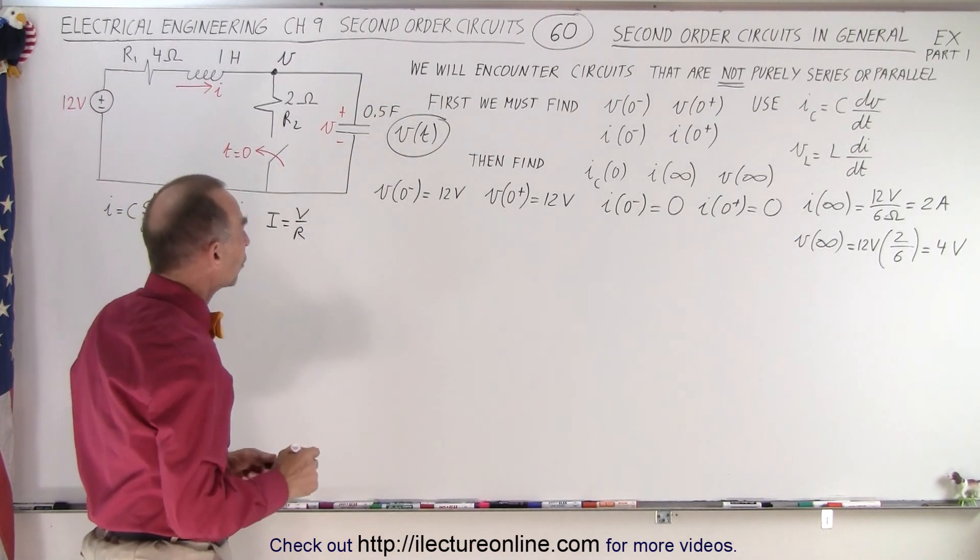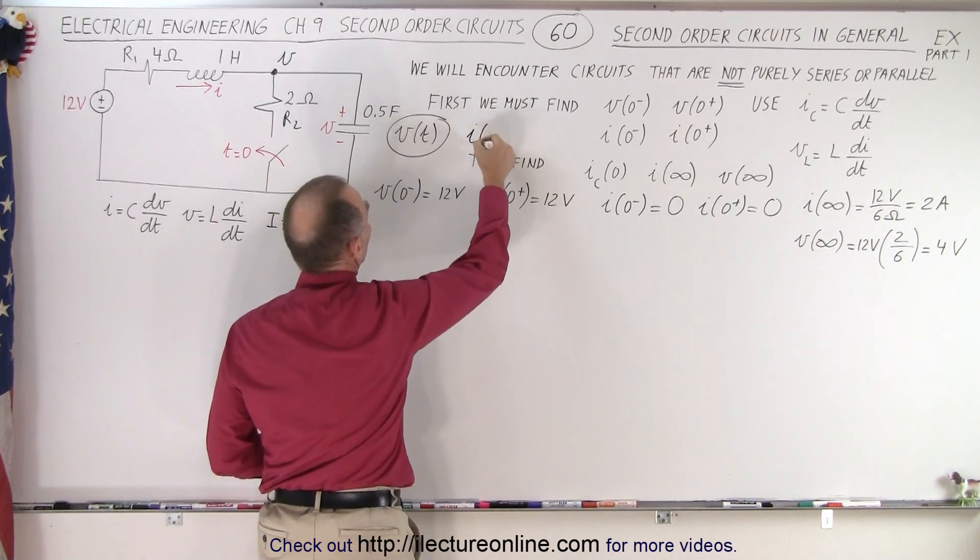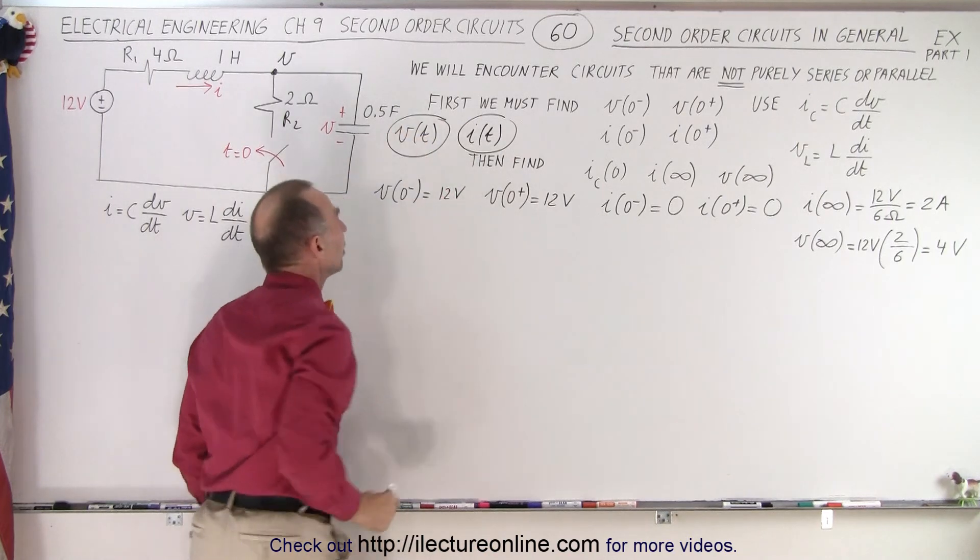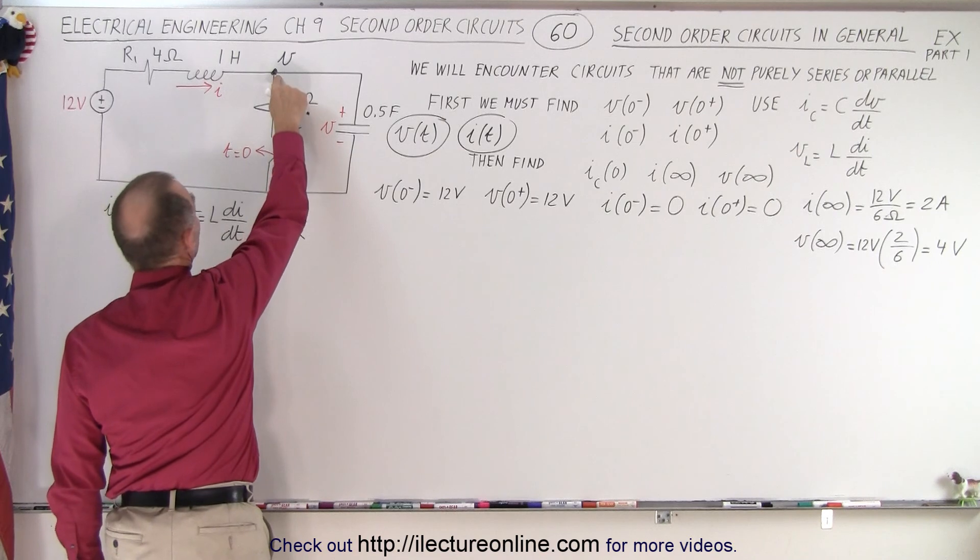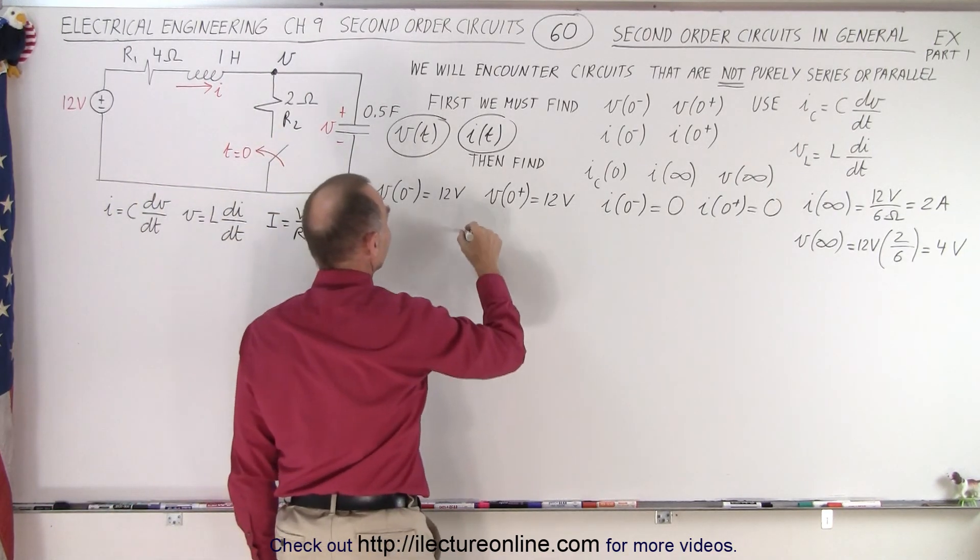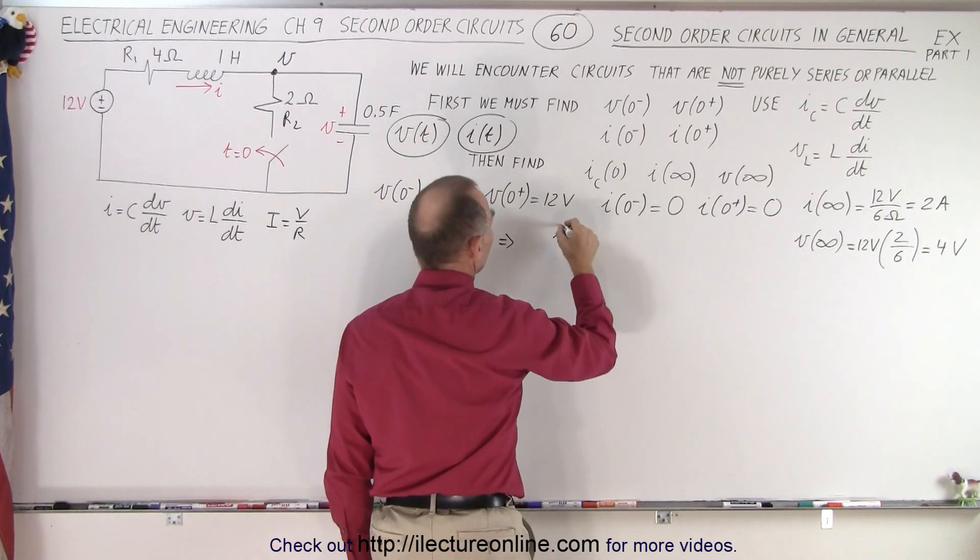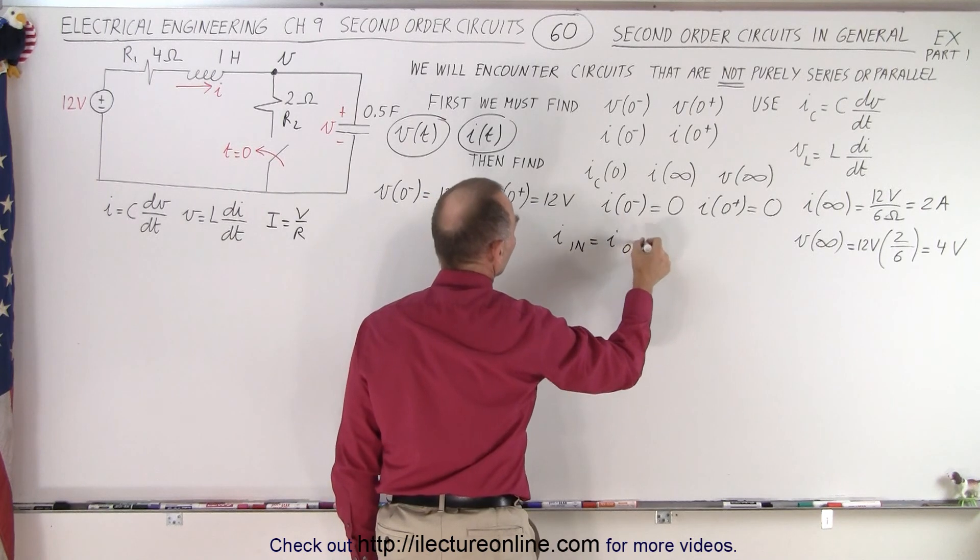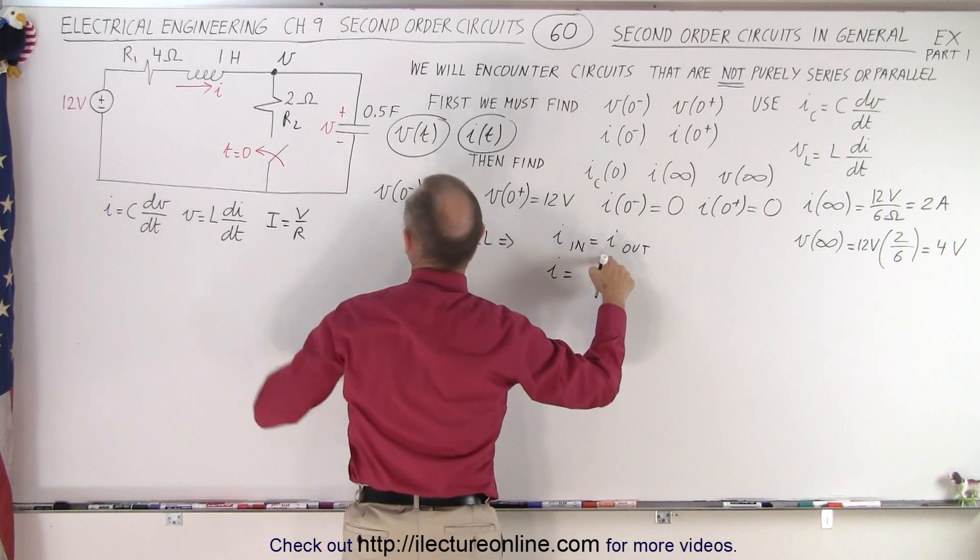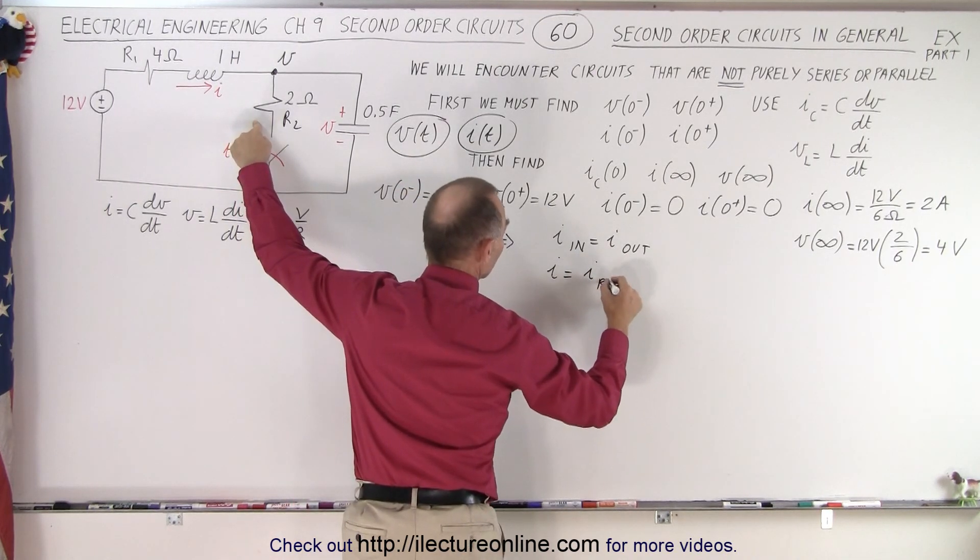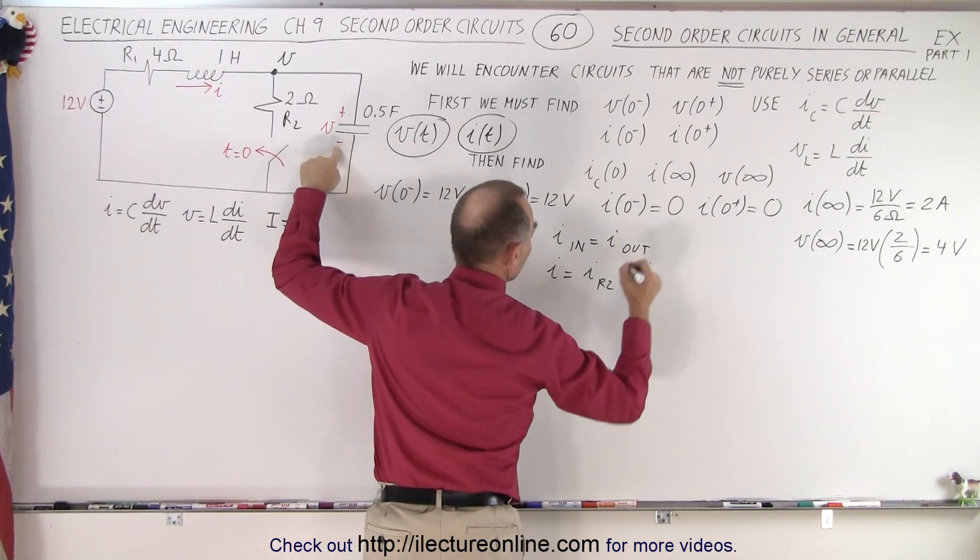So now we need to come up with an equation to find the voltage as a function of time, and eventually we'll need to find the current as a function of time. So we're first going to find the voltage as a function of time. To do that, we're going to start with this point right here, and we can use the KCL for that. And we can say that I in equals I out. And the current in will be the current through the inductor, so we'll call that I. And the current out will be the current through the resistor, I over R2, plus I through the capacitor.